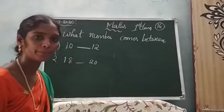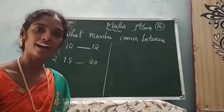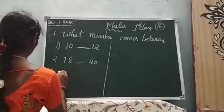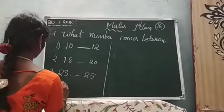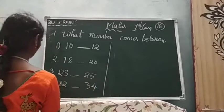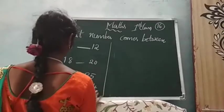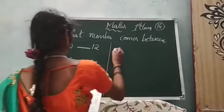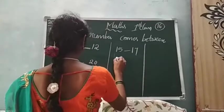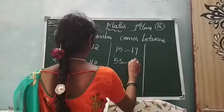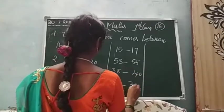Which number will you put in the blank? First of all I will give you some questions, later you will fill the answer. 15 dash 17 and 53 dash 55. After that 38 dash 40 and 31.